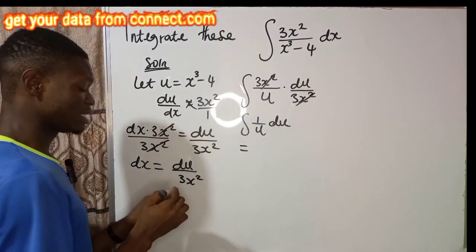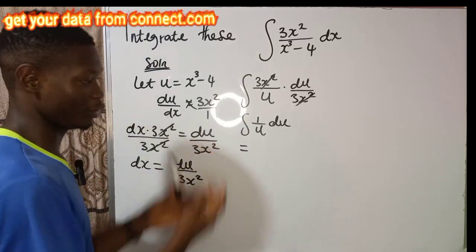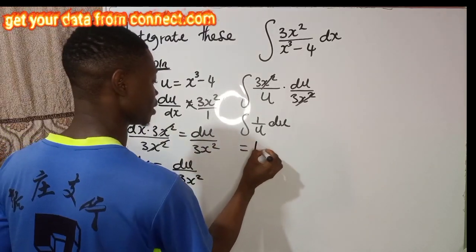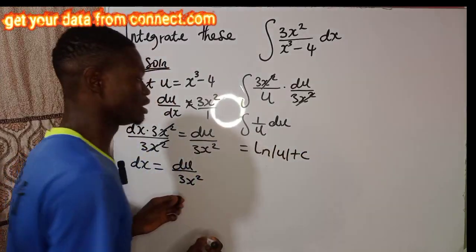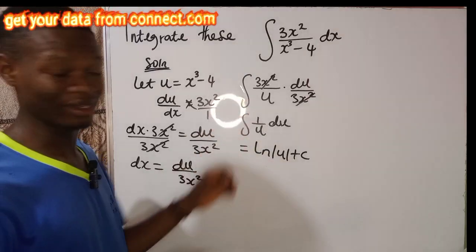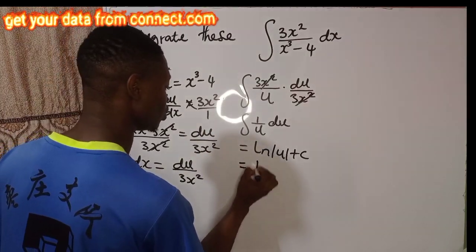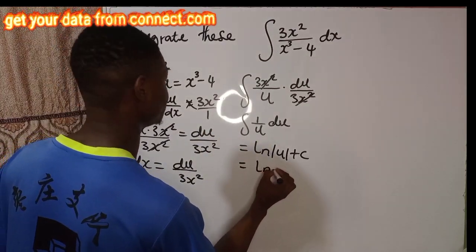Remember, integral of 1 over u is what? Absolute value of what? ln u plus what? C, the arbitrary constant, because it's indefinite. So which is equal to ln of u is what?